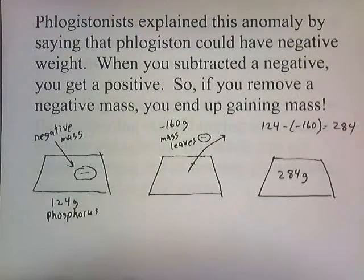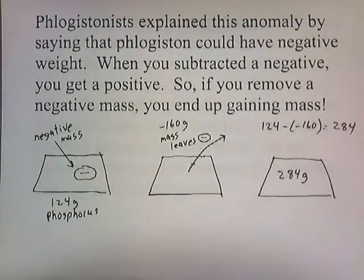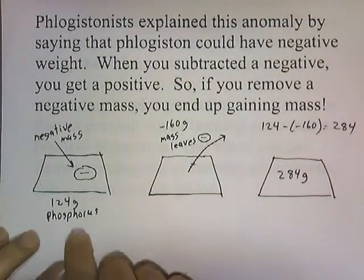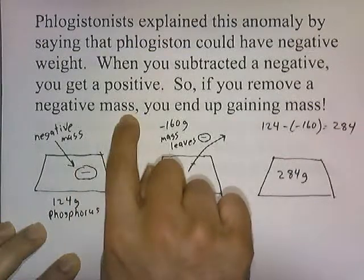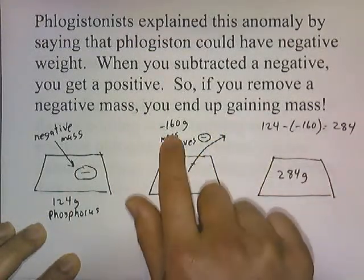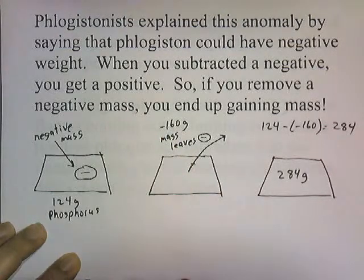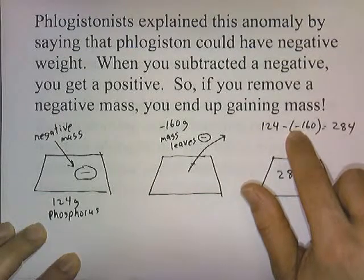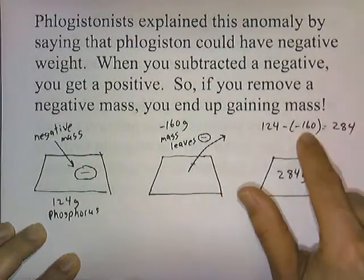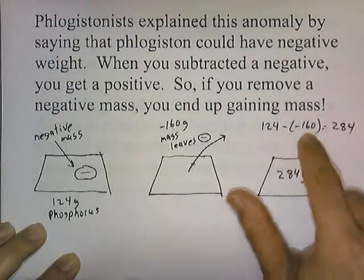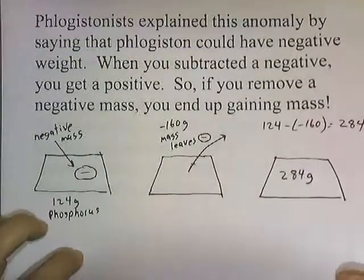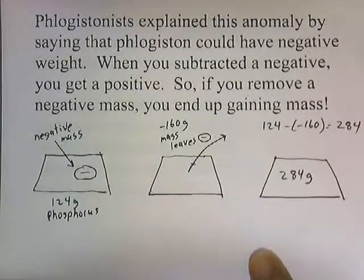The phlogistonists explained this gain in mass after burning by saying that phlogiston could have negative weight. When you subtract a negative, you get a positive — so if you remove a negative mass, you end up gaining mass. For example, here's phosphorus with some negative phlogiston in it. When you burned it, the negative mass went out. So instead of 124 grams minus 160, since you're subtracting a negative mass, you're really adding a positive: 124 plus 160 is 284 grams. That's the explanation they gave for why phosphorus gained weight — it was losing negative mass.